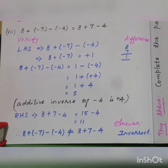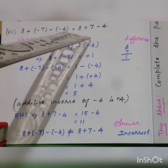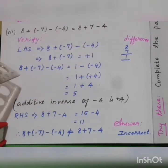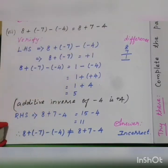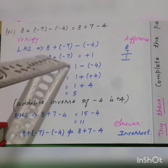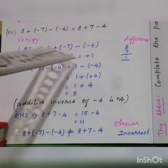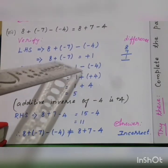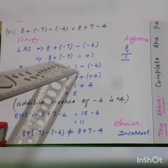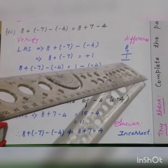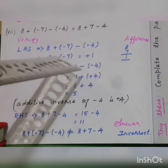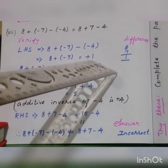7th statement: 8 plus minus 7 minus minus of 4, equal to 8 plus 7 minus 4. Left hand side: 8 plus minus 7 minus minus of 4. First we take the first two numbers: 8 plus minus 7. One positive, one negative — difference the numbers. 8 minus 7 is 1. The bigger number is 8, sign is plus, so the answer is plus 1.